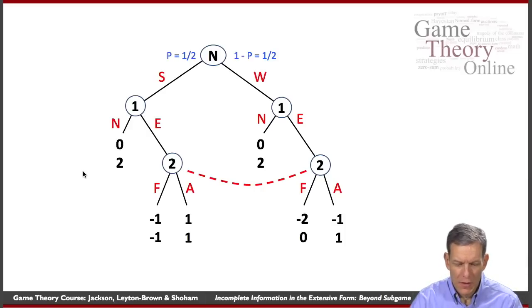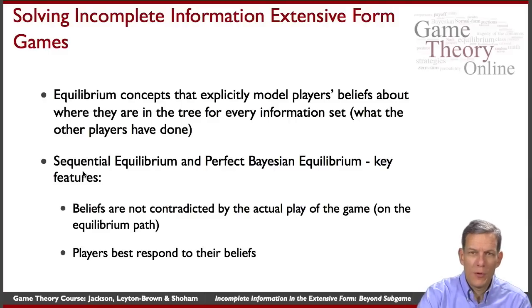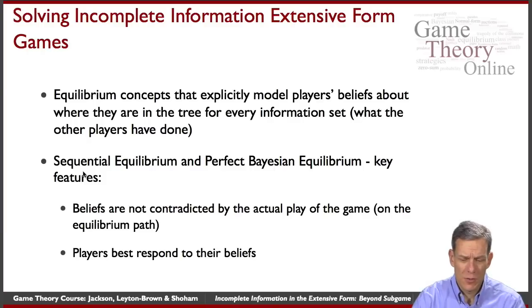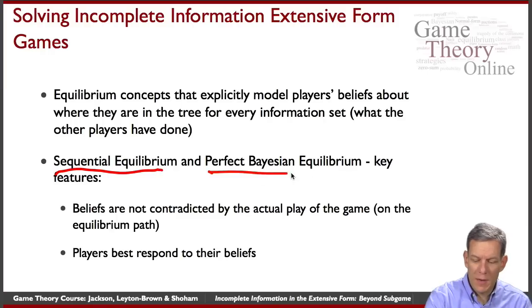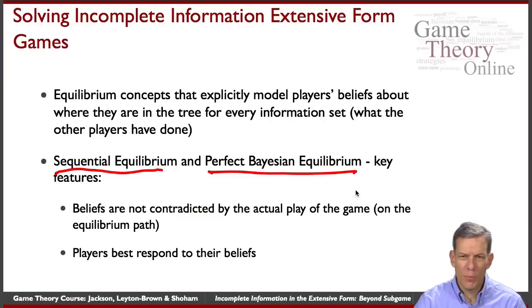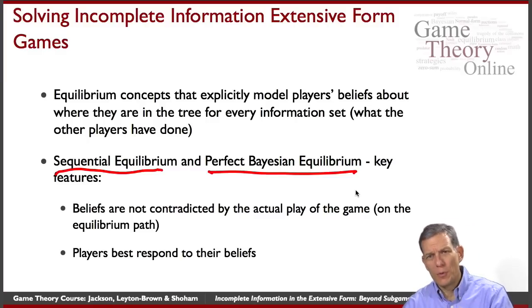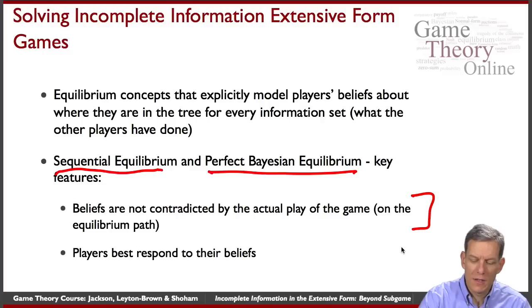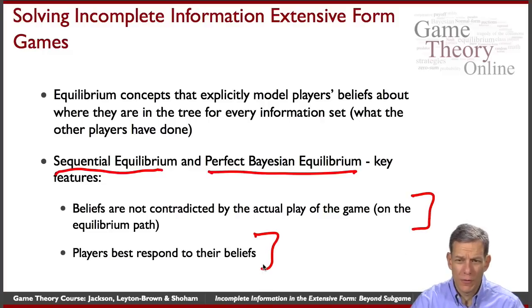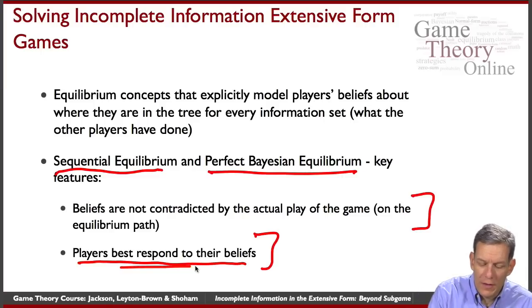But one idea behind doing this and analyzing these games is to try and build in the idea behind subgame perfection in terms of sequential rationality. And so there are equilibrium concepts that explicitly model players' beliefs about where they are in a tree for every information set. And there's two solution concepts in particular known as sequential equilibrium and perfect Bayesian equilibrium that have key features where they have players. As part of the equilibrium, you specify what the beliefs of the players are. And it should be that the beliefs are not contradicted by the actual play of the game and players best respond to those beliefs. But you also make a requirement that the beliefs aren't contradicted by the actual play of the game, and players have to best respond to their beliefs even off the equilibrium path. And that's going to have bite in this game.